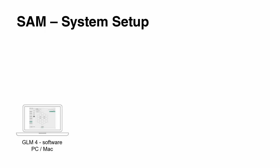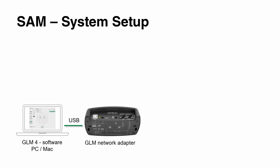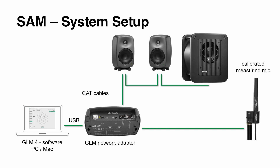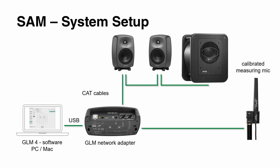The GLM setup is straightforward. It uses a network adapter connected via USB to your computer, with an Ethernet cable daisy-chained from one speaker to the next. The calibration microphone is also connected to the GLM network adapter. This setup can accommodate up to 80 speakers — enough for most immersive audio applications, including large ambisonics dome installations. If needed, a volume controller can be added, making GLM a fully functional monitor controller for immersive audio.